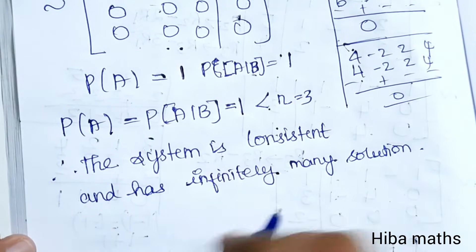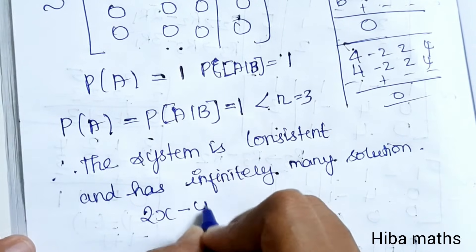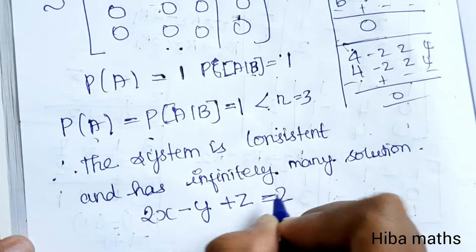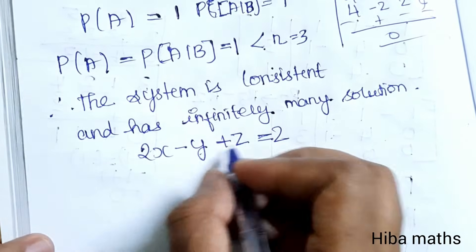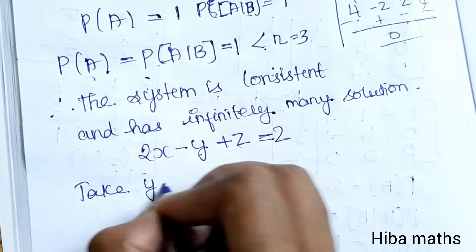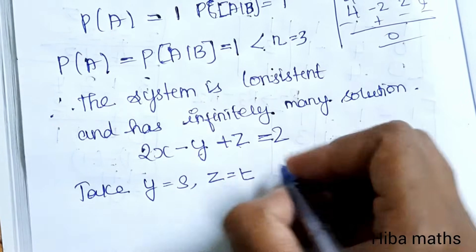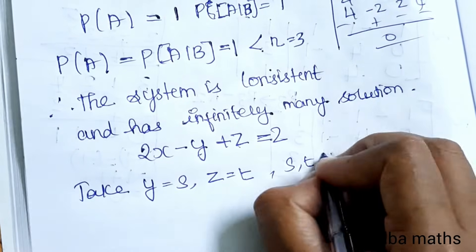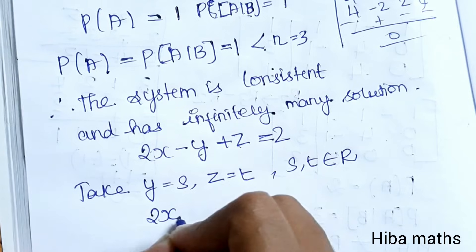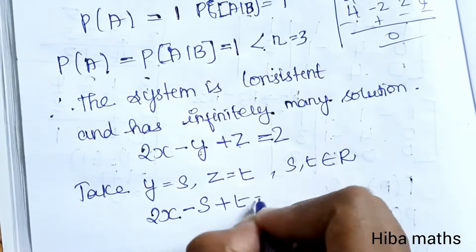Now we find the solution. From 2x minus y plus z equals 2, we have two free unknowns, so we assign two different parameter values. Let y equal s and z equal t, where s and t belong to R. Substituting: 2x minus s plus t equals 2.